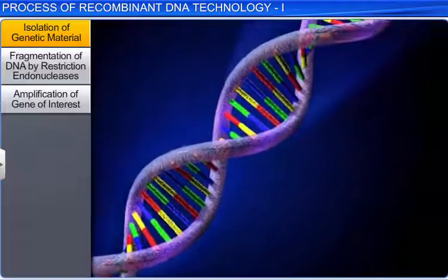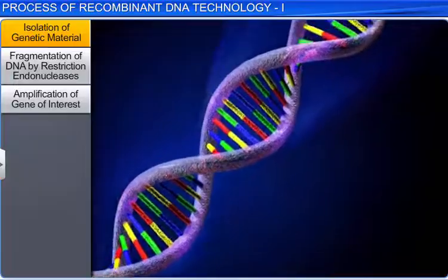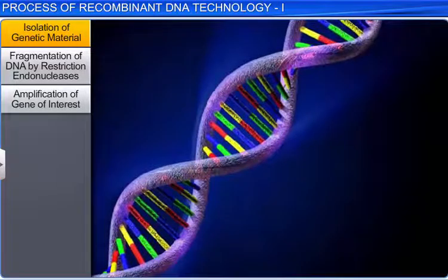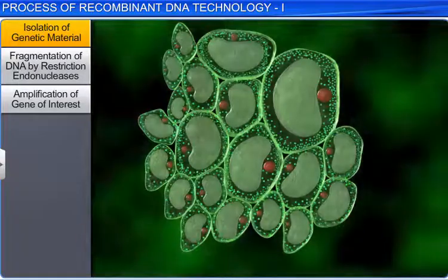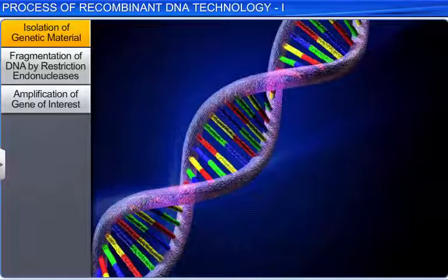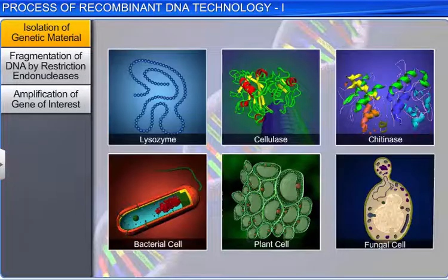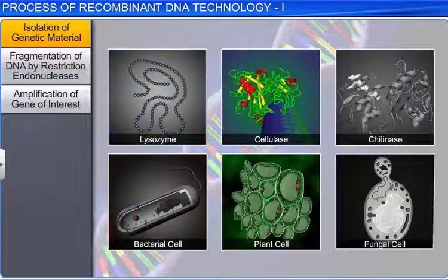That is, the DNA should be free of macromolecules. To obtain DNA, a sample of cells is generally blended or ground thoroughly. This helps separate the cells from each other. In order to isolate DNA, enzymes such as lysozyme, cellulase, and titanase are used to treat bacterial cells, plant cells, and fungal cells respectively.